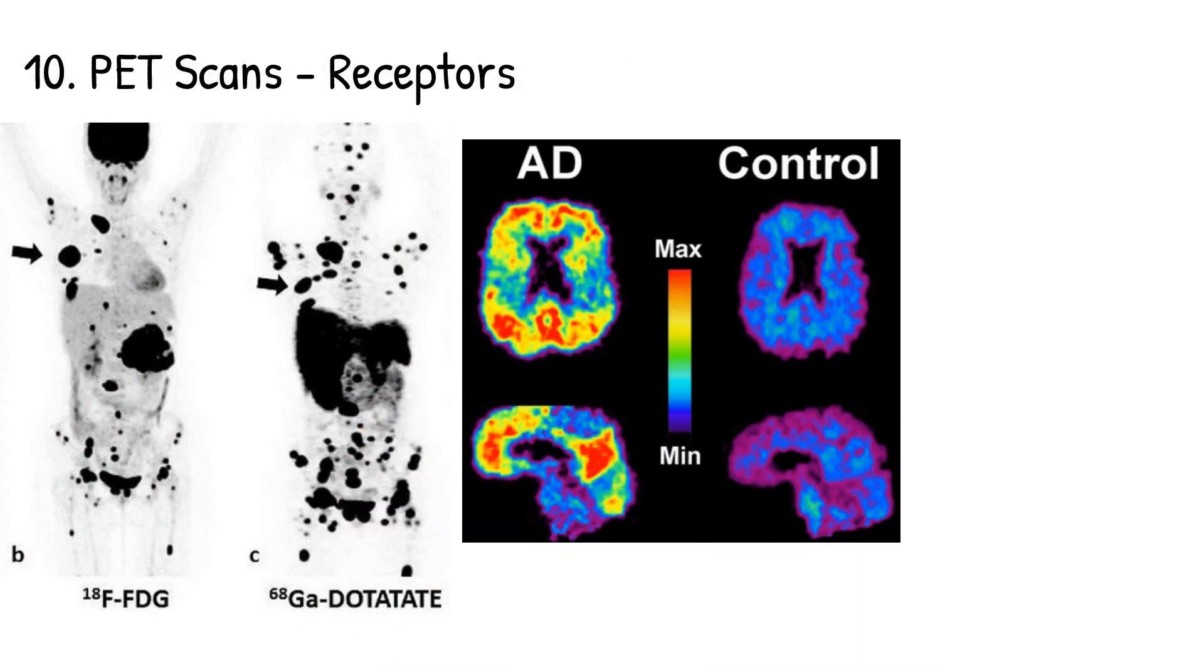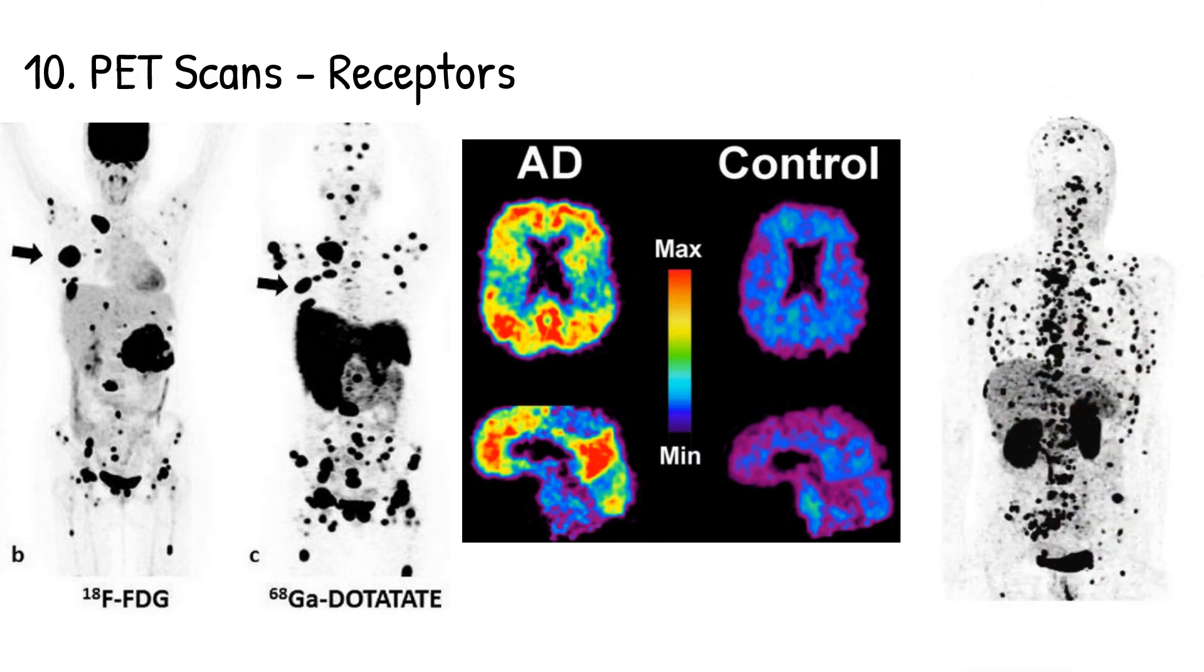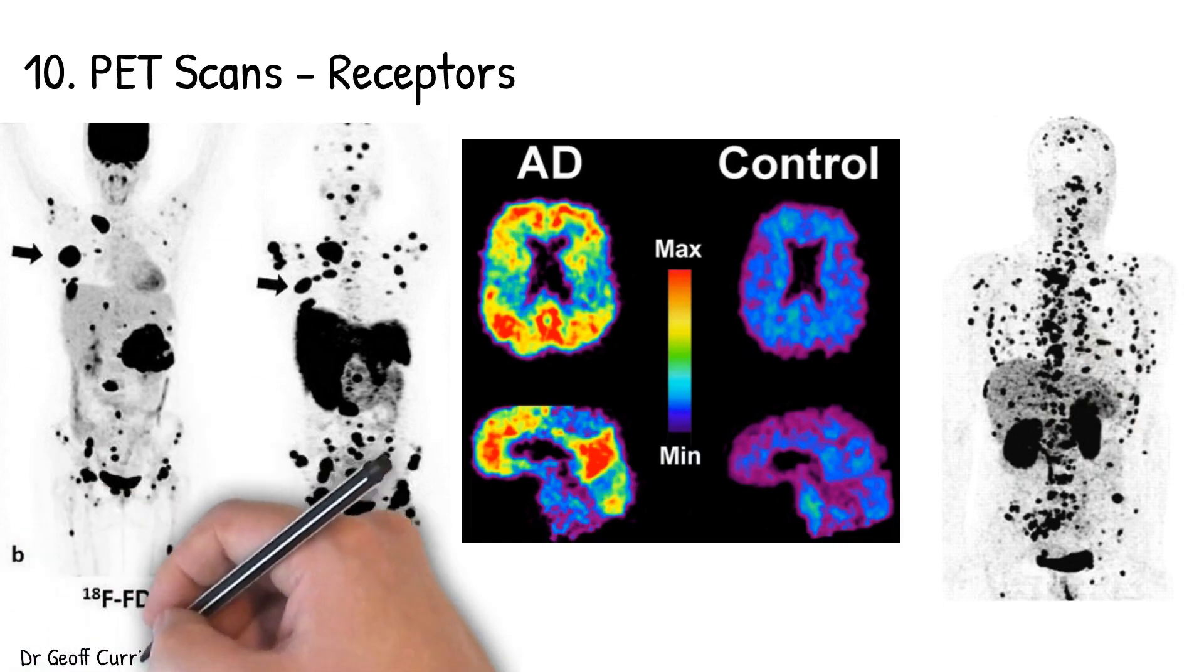We can also compare our traditional FDG with receptors with dotatate receptors, which are somatostatin receptors. And you can see the difference between the FDG or the glucose distribution and the receptor. And then we can refine that further. The image on the far right where we use a copper-based radiotracer for receptor imaging.